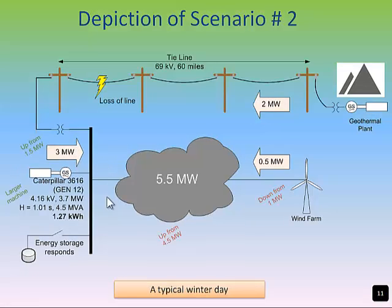In scenario two, the city is drawing five and a half megawatts. The wind farm is down to half a megawatt. Two megawatts are still being imported from the geothermal site. However, the diesel unit was changed to a larger machine. This scenario is representative of a typical winter day. Both scenarios one and two model the situation of losing the geothermal tie line at once.